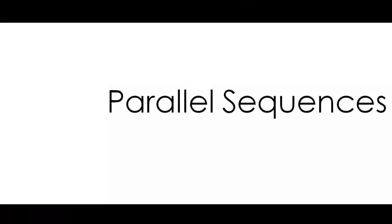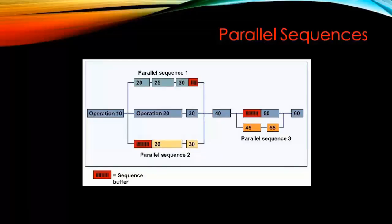First of all, let us start with Parallel Sequences. What is Parallel Sequences in Routing? The meaning of Parallel Sequence is that once an operation is running, in parallel we can run another operation. In some industries it is possible — for example, if a material is going through five different work centers, five different machines, when the process is happening on machine number 20, say the second operation, we can also run another operation in parallel to operation number 20. That is what is known as Parallel Sequences.